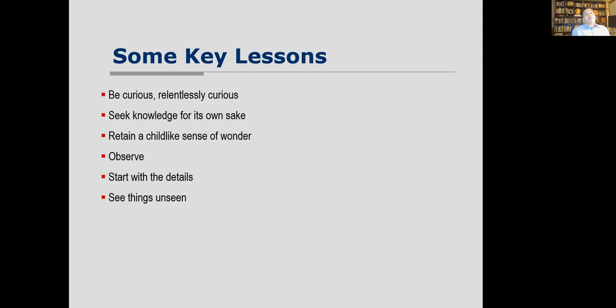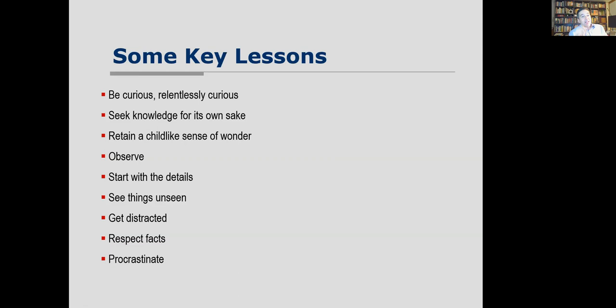Get distracted sometimes. It's important to be focused, but sometimes innovation comes from outside the focus. Remember Alexander Fleming and the discovery of penicillin in 1928 — he was growing bacteria and noticed some was dying. Instead of just cleaning it up and fixing the experiment, he observed and got distracted by that unusual behavior, and discovered penicillin. Be very respectful of facts, and sometimes procrastinate — let things take time rather than always rushing. Another key thing is to think visually.